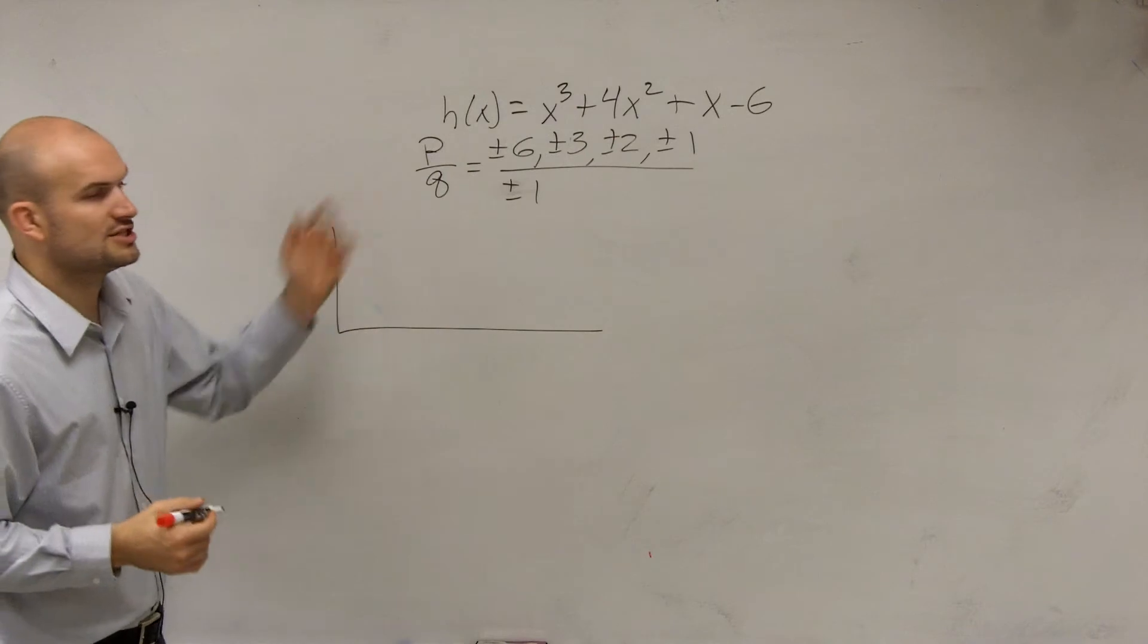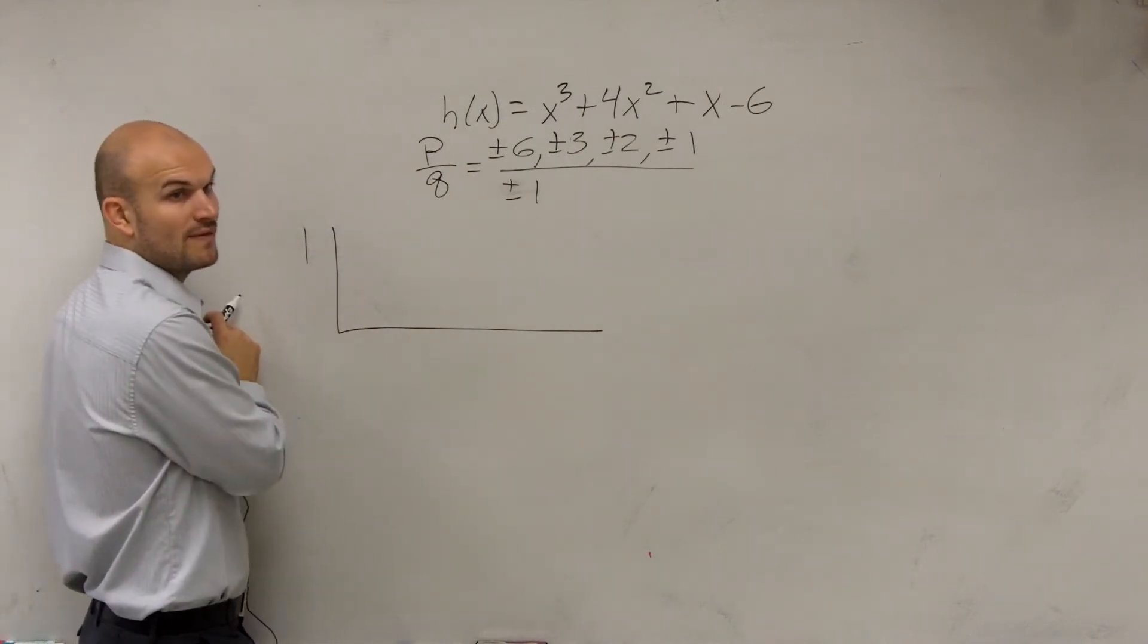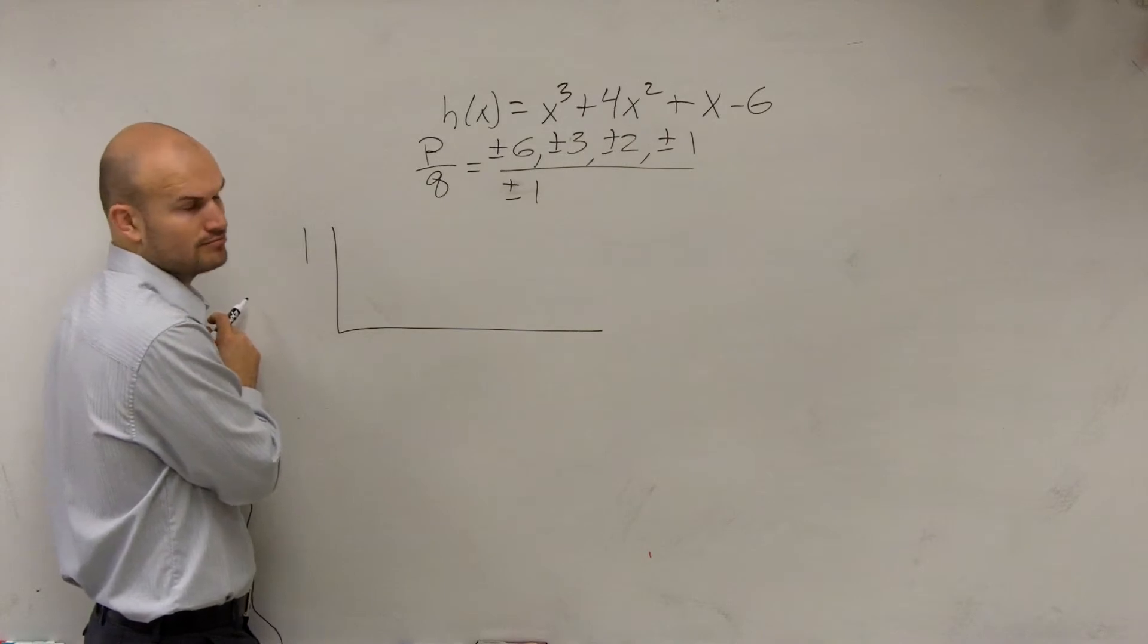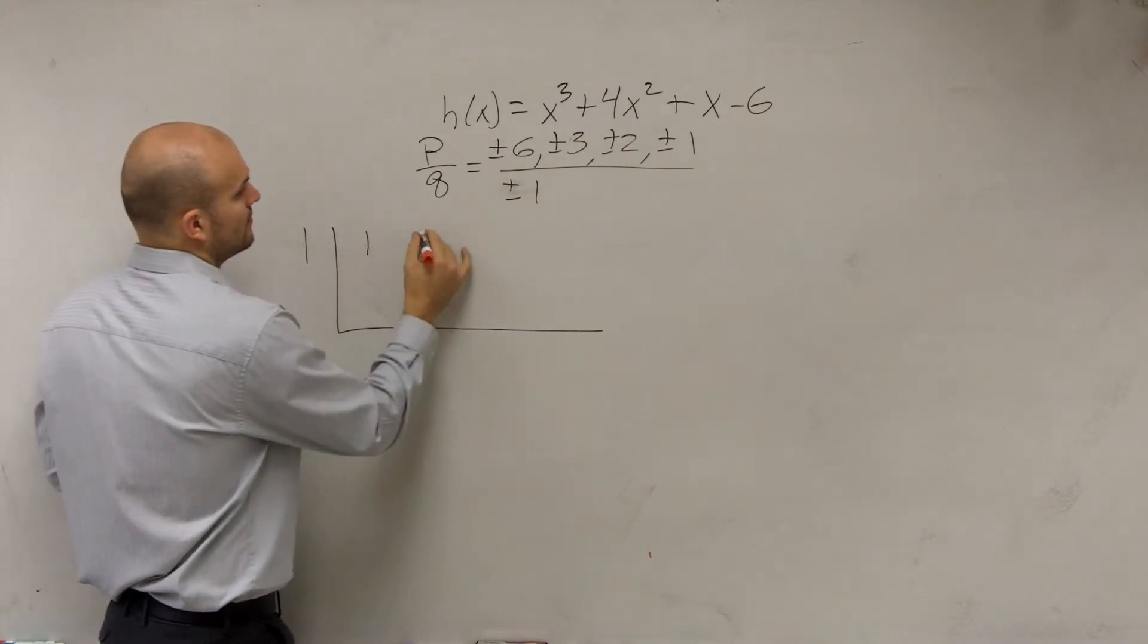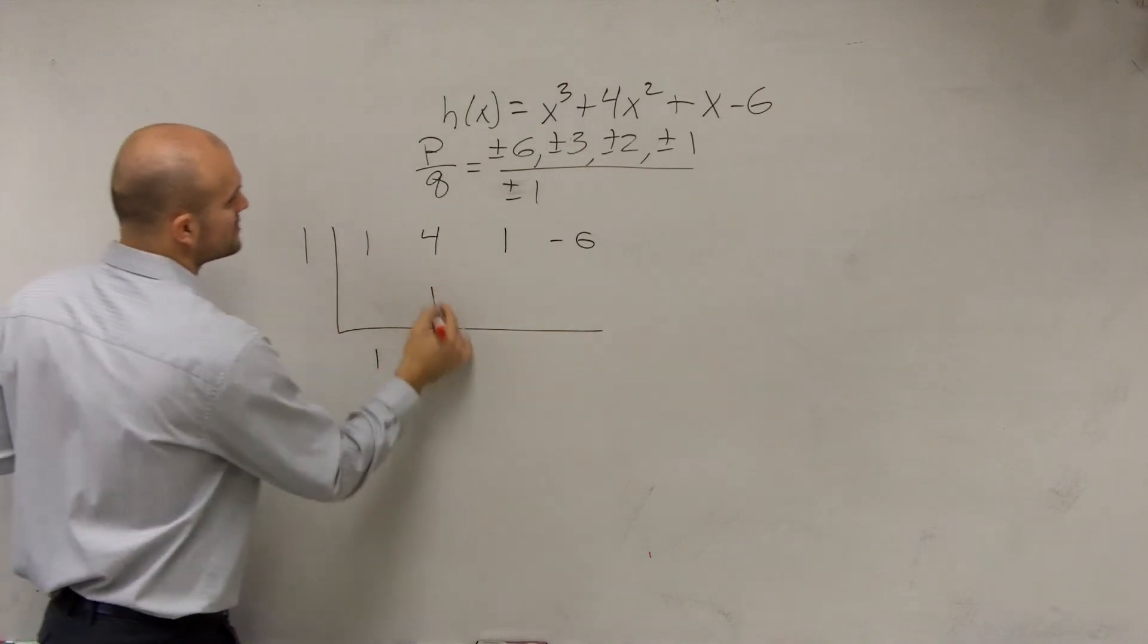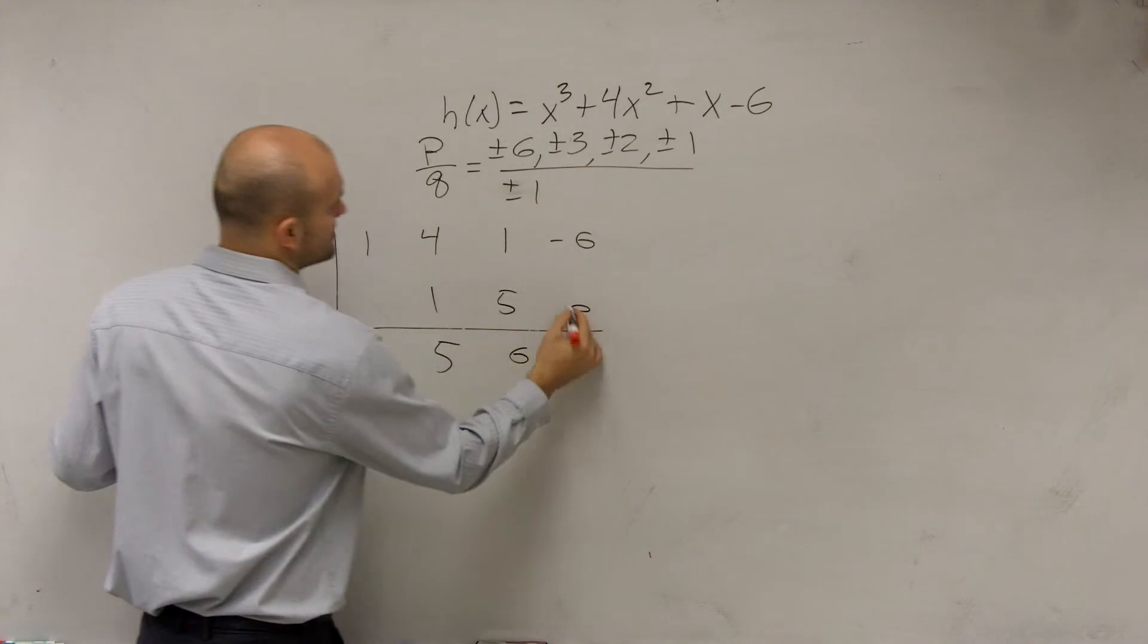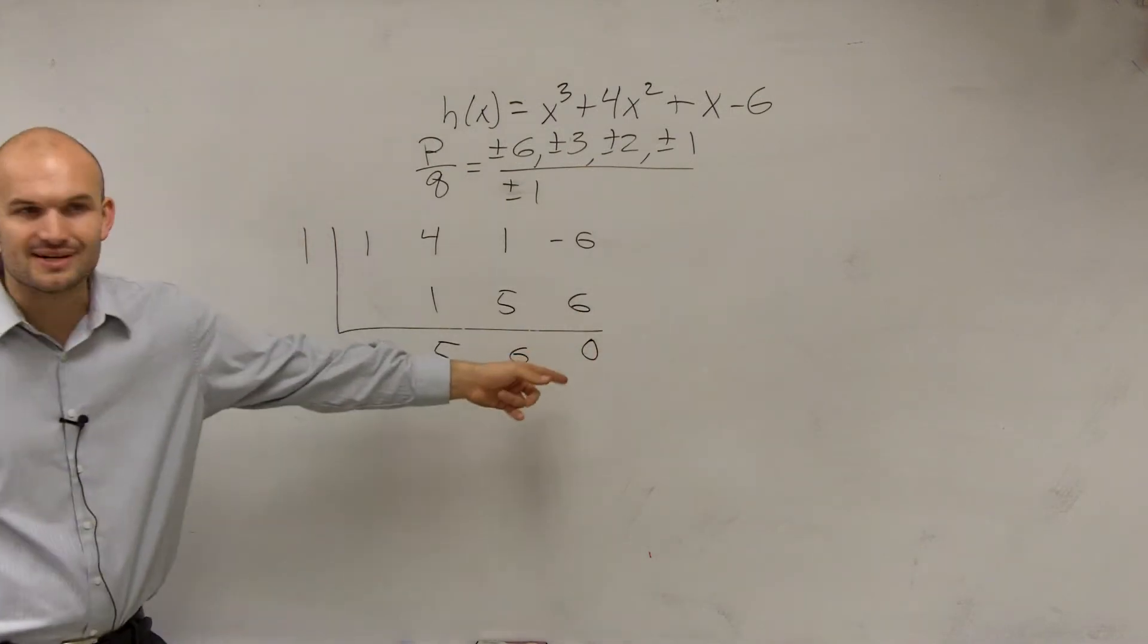So the first one I'll do is 1. Let's do synthetic division to see if 1 is a zero. Because if 1 is a zero, that means x minus 1 is a factor, right? So we do 1, 4, 1, negative 6. Bring down the 1. 1 times 1 is 1, 5. 5 times 1 is 5, 6. 6 times 1 is 6. Hey, look it. We've got a remainder of 0. First time.